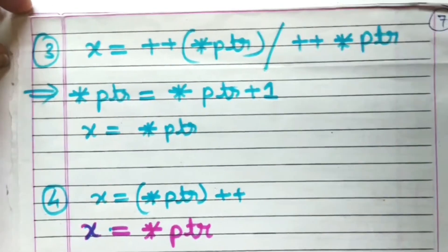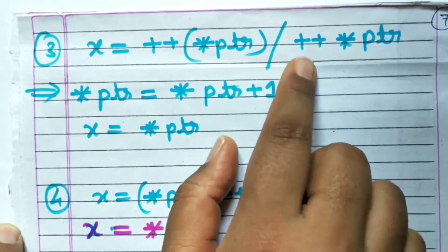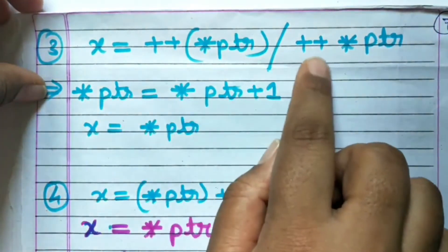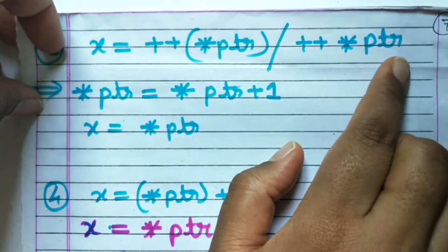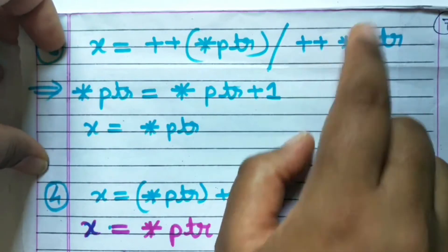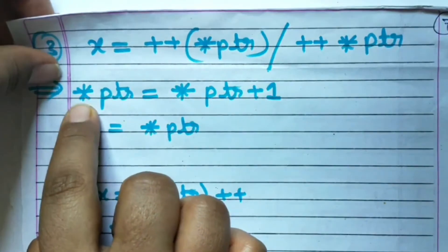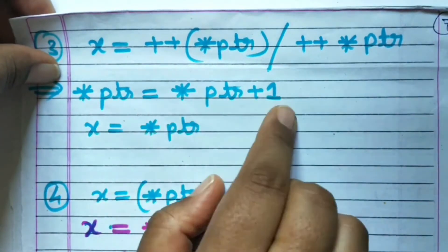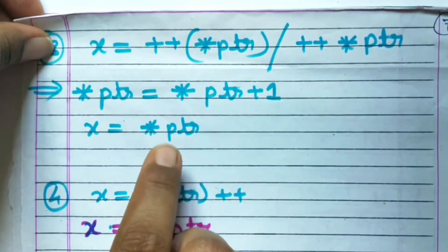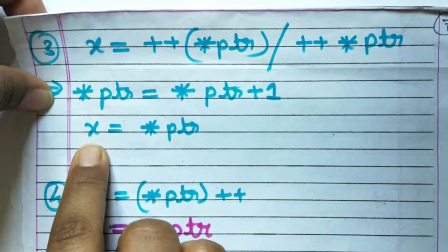Next is x = ++(*ptr), or ++*ptr. As this expression evaluates from right to left, the pre-increment operation will be performed on the value pointed by PTR. That is: *PTR = *PTR + 1 — the value pointed by PTR will be incremented — and then after the increment, whatever value is pointed by PTR will be assigned to x.